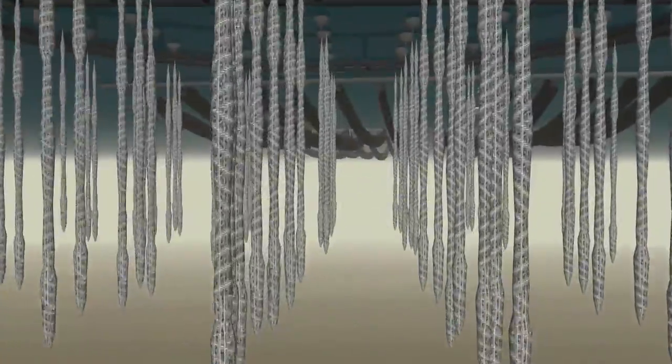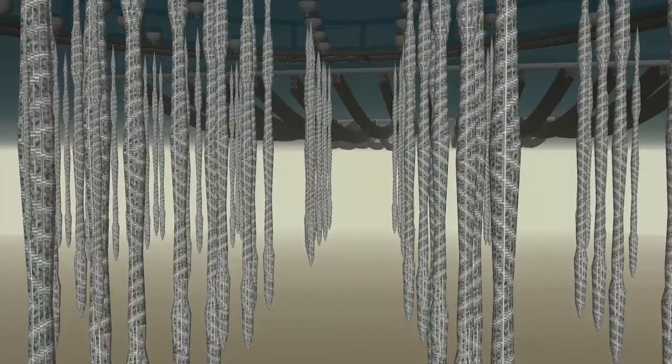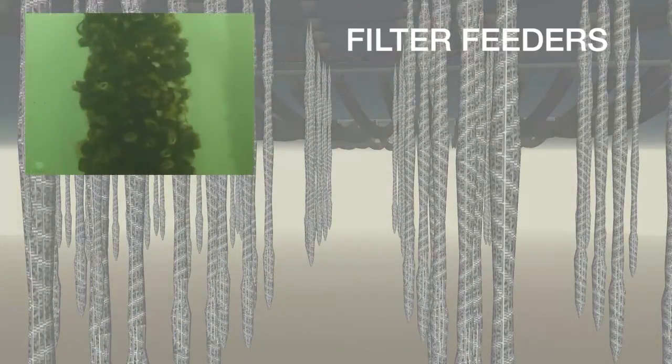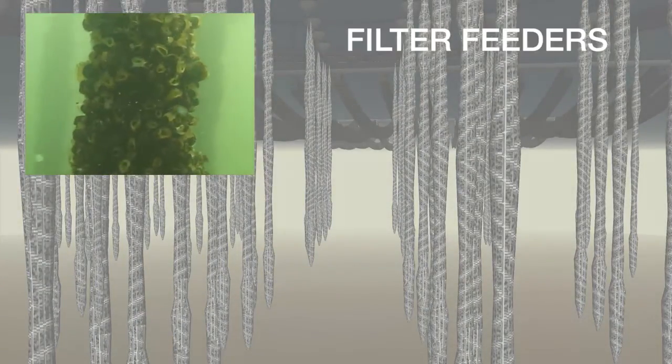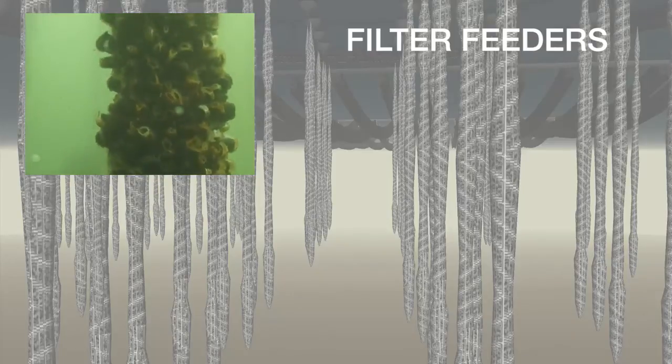Eventually, this new mixture exits the fish cage where some of the particles are removed at the first module of organic extraction. This may be in the form of filter feeders, such as mussels, that are hanging suspended from rafts at the surface.